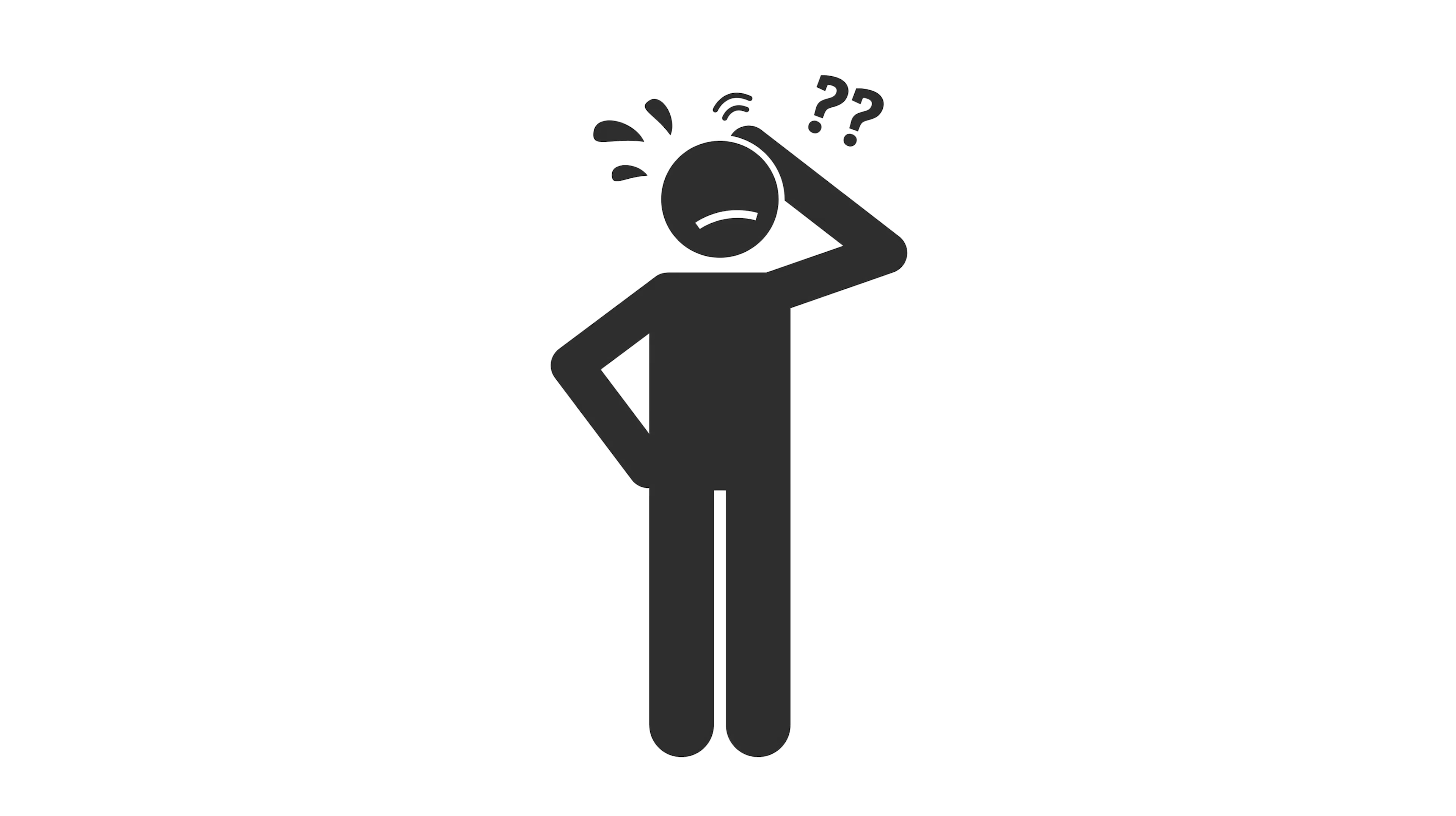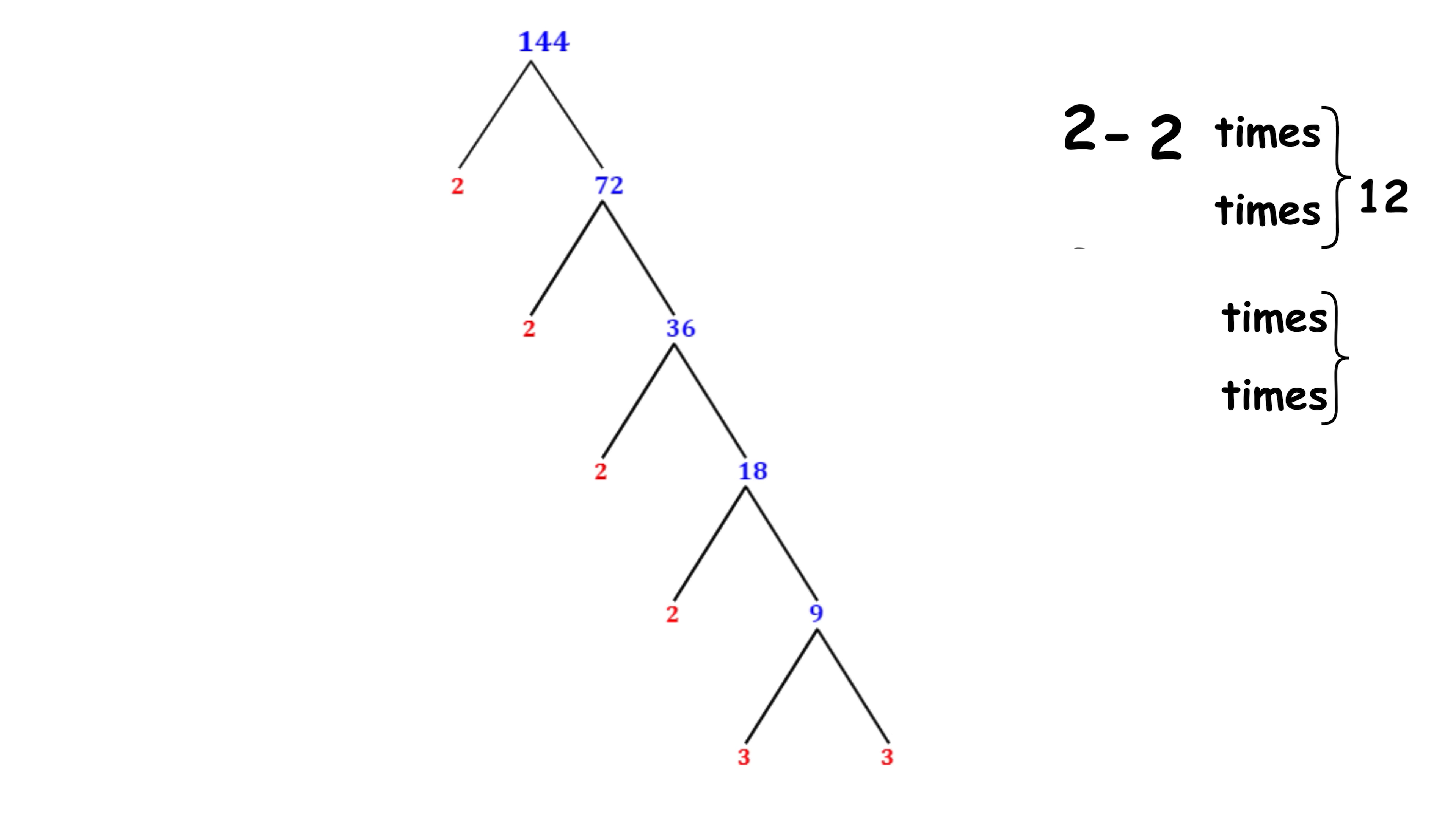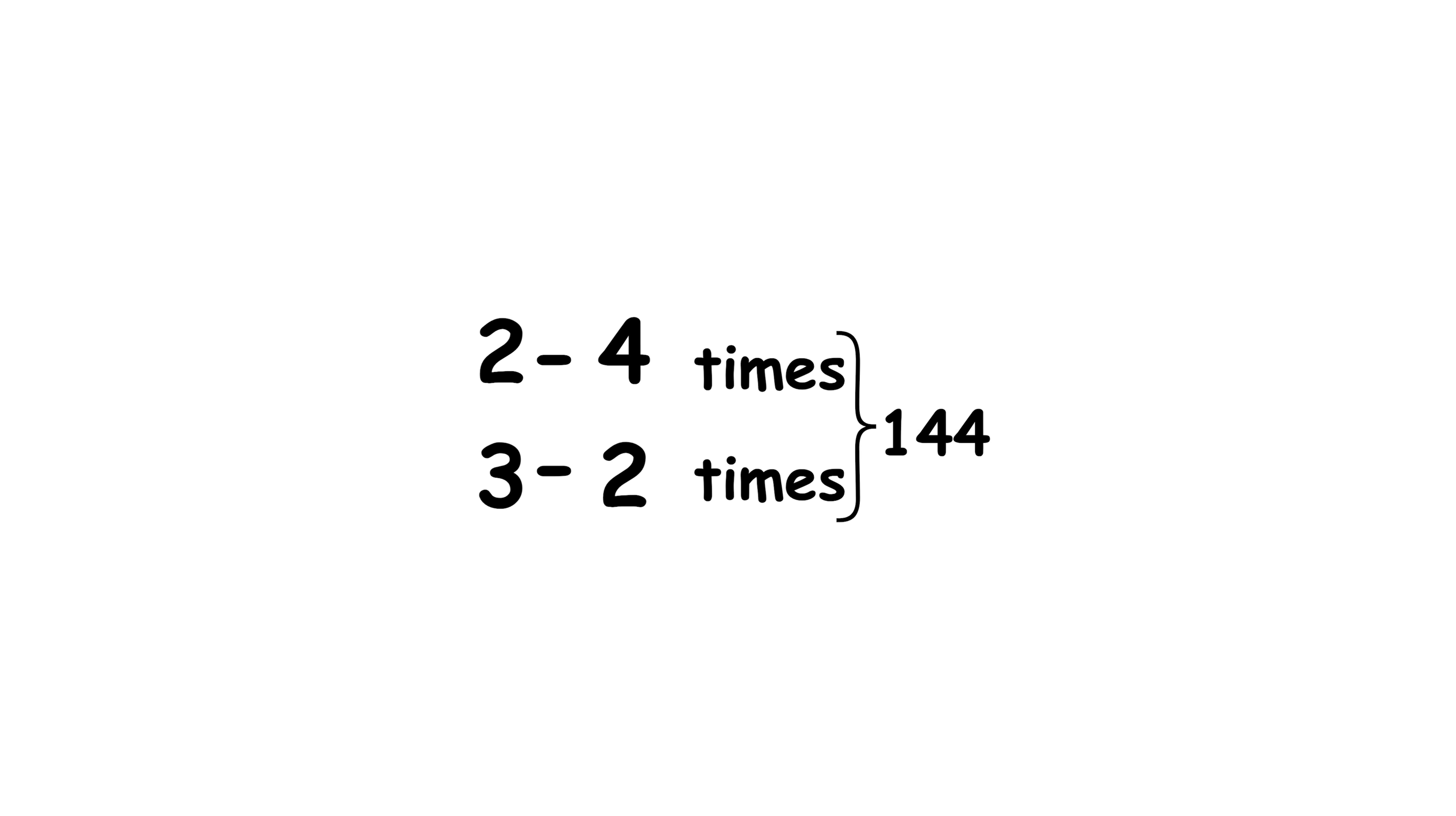Ultimately, the reason this happens is that we multiplied 2 copies of 12 to get 144. So for each factor that appears in 12, it appears twice as many times in 144. This logic applies to square numbers in general. So each prime factor of a square number must appear an even number of times in the prime factorization of that square number.